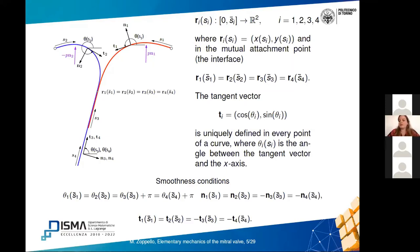To this end we introduce four curves describing the mitral valve. Two of these curves describe the portion of non-attached leaflets, and the other two describe the partially in-contact portion of the rod. Each curve is described by a function r_i which is a function of the arc length along each rod.